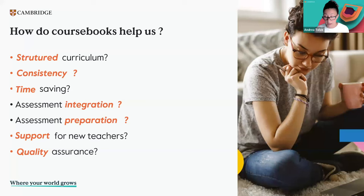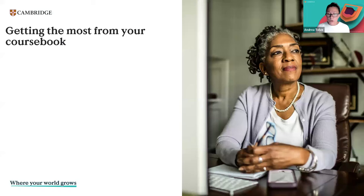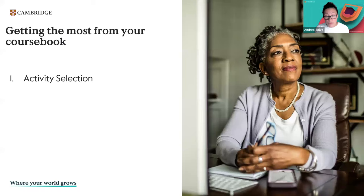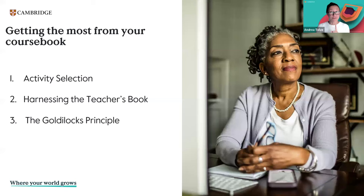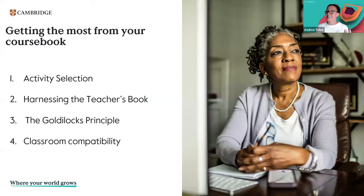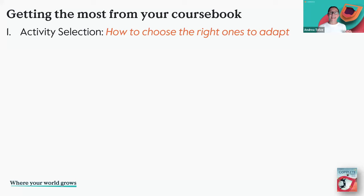I put a question mark by all of these because this is something we'd really like the coursebooks we use to include. When thinking about getting the most from our coursebooks, I've divided it into four main areas: activity selection — how to choose the right activities to adapt; harnessing the teacher's book; the Goldilocks principle — is it just right or a no-go?; and number four, classroom compatibility — assessing activity suitability.